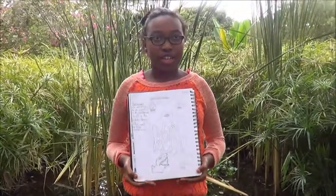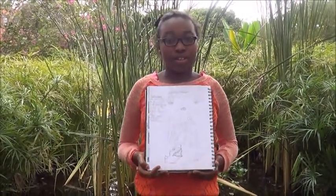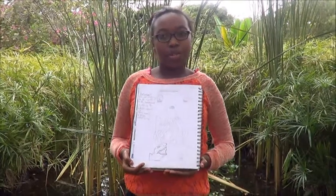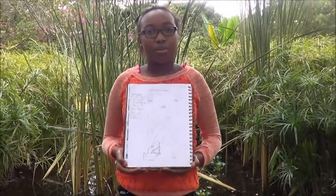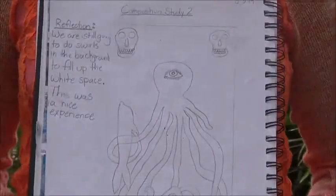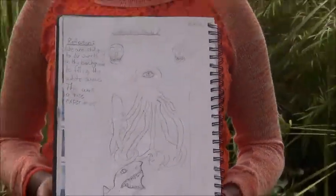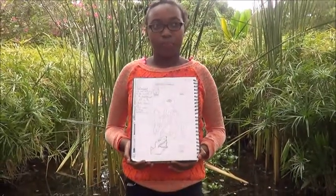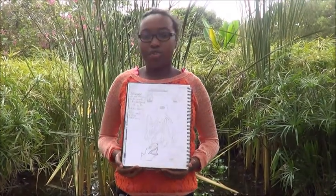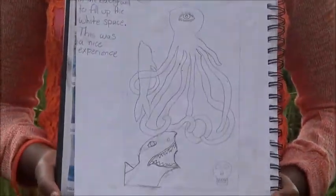We didn't finish this composition study because we already finished the first one and chose it. But in this composition study there are three skulls in three corners and they represent death. There were supposed to be swirls inside the eyes to represent the craziness of death. There's an octopus in the middle and a dolphin entangled in the octopus's tentacles. There was also supposed to be another element for unity, but we didn't finish it. The shark also means hope because the shark can save the dolphins by hurting the octopus.